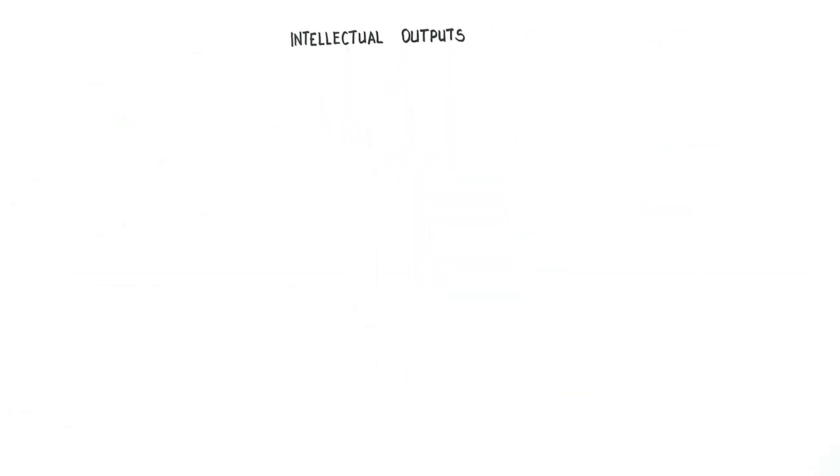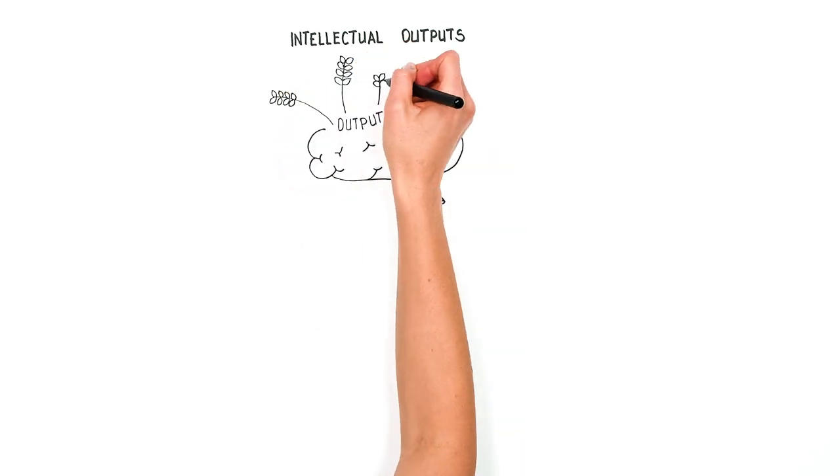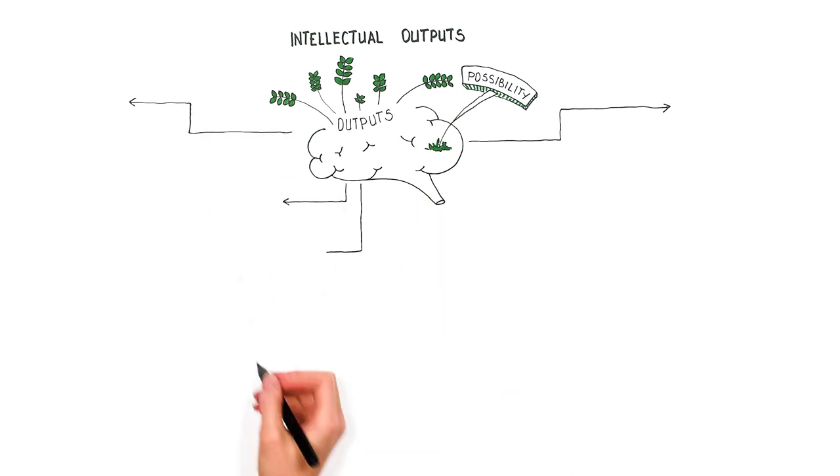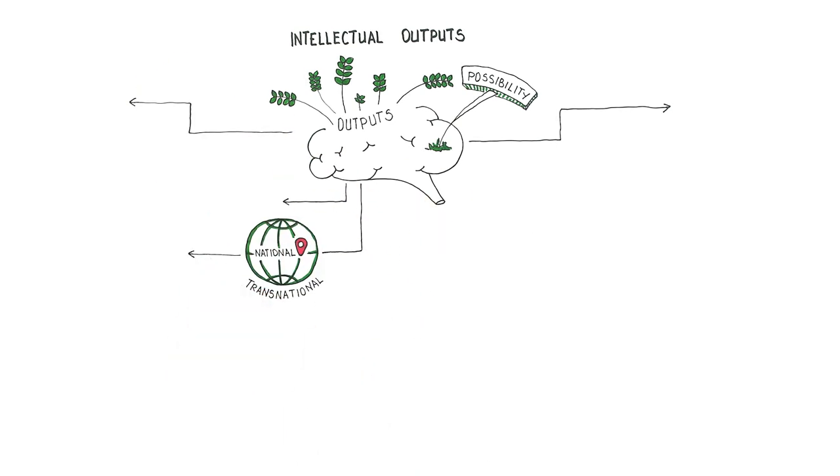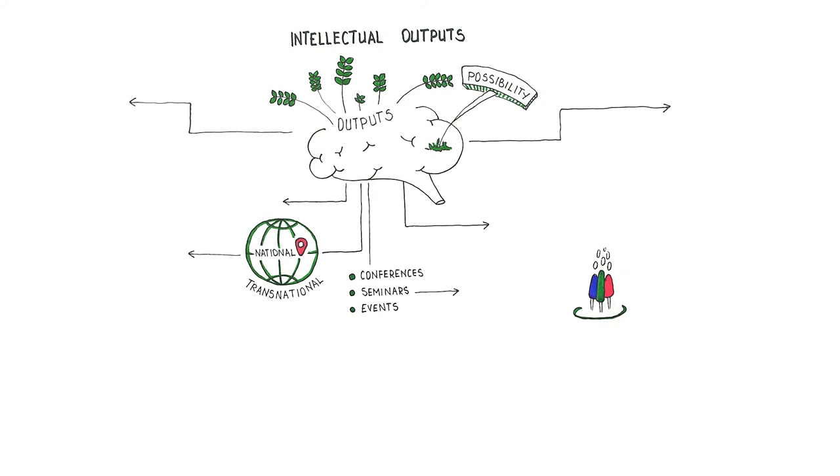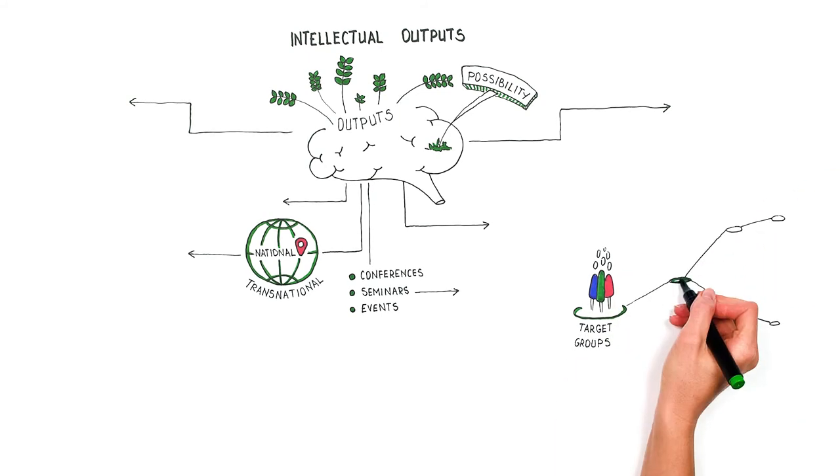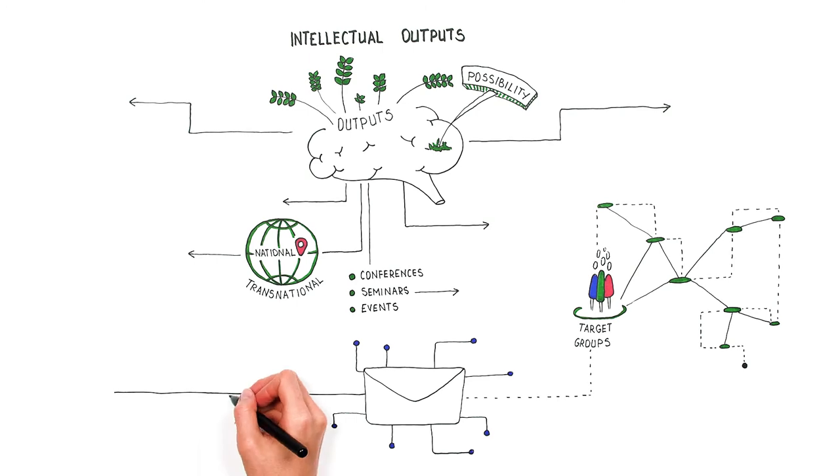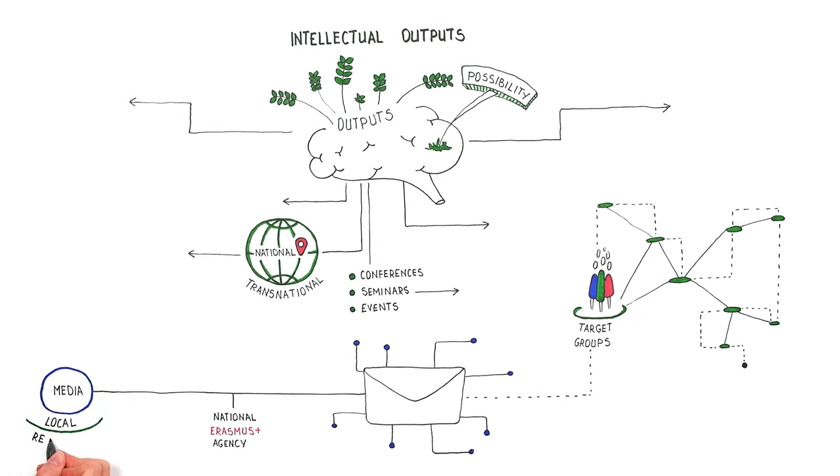Only in strategic partnership projects aimed at supporting innovation, multiplier event is an added possibility to disseminate your intellectual outputs. These can be national and transnational conferences, seminars, or events to share and disseminate your results to a wider audience. It is interesting to map out all potentially interested targets. Usually, there are much more of them than you think. Use your networks to invite people from the target groups mentioned earlier. Don't forget to invite your national Erasmus Plus agencies and the media, local or regional newspapers, radio, television, young bloggers, etc.